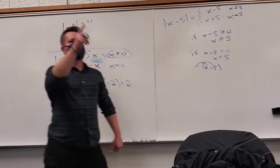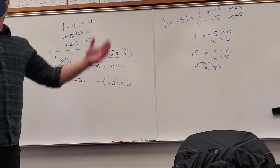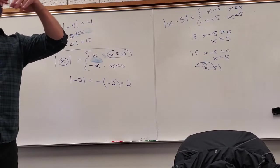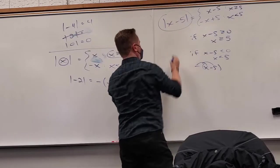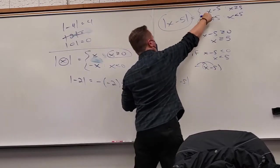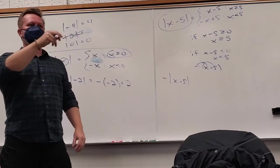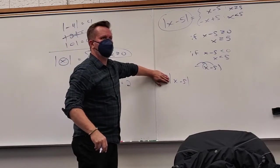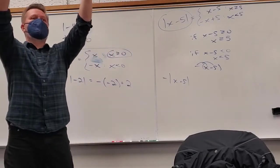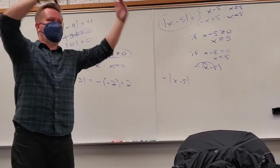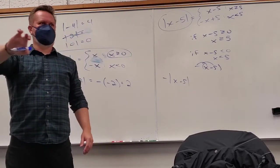What if there's a negative outside the bracket, like −|x − 5|? Once you know what the inside does in all cases, you just multiply each piece by negative one. So the important thing is figuring out the absolute value first — anything outside it you deal with next.